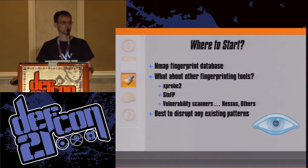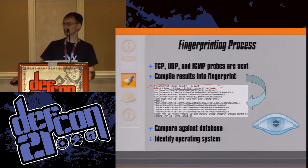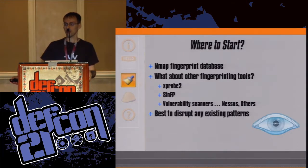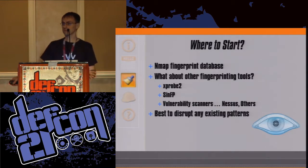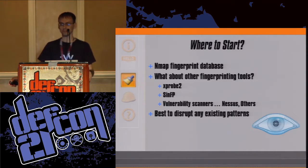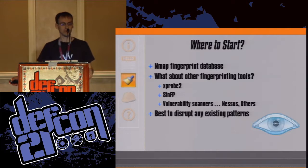The NMAP fingerprint database is very complex — ultimately too much trouble to unwrap. There are also other fingerprinting tools: X-Probe 2, the newer SynFP, and vulnerability scanners like Nessus. It's really not a good idea to chase after every tool and its techniques. Ultimately, it's best to try to disrupt any existing pattern — and that's what I look to do with the normalization.